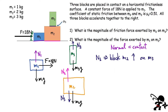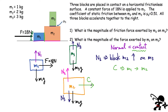There's one more surface we haven't considered: the interface between M1 and M2. Block M1 is going to be pushing M2, so we have a contact force C acting on M2 pointing to the right. By Newton's third law, there must be an equal and opposite force — same magnitude, opposite direction, acting on a different object. So M2 pushes back on M1.